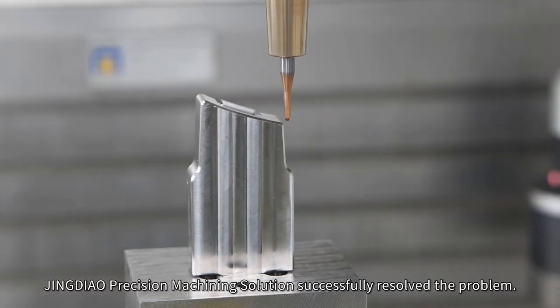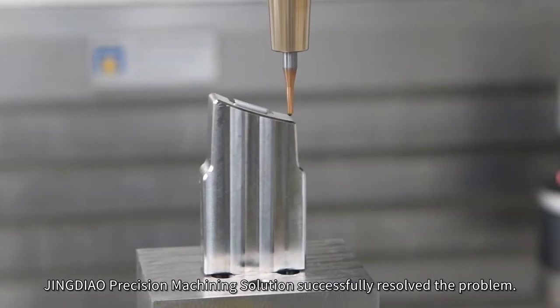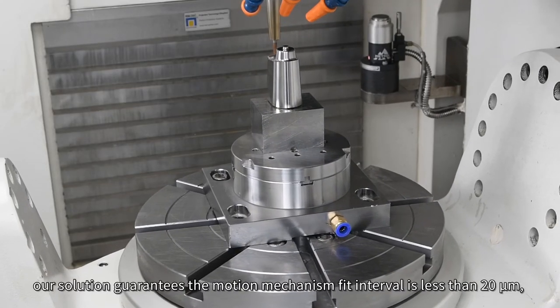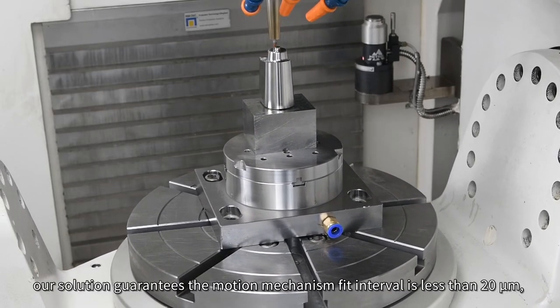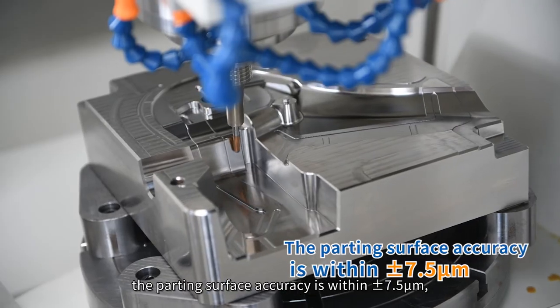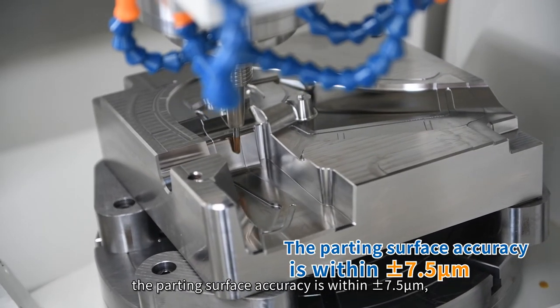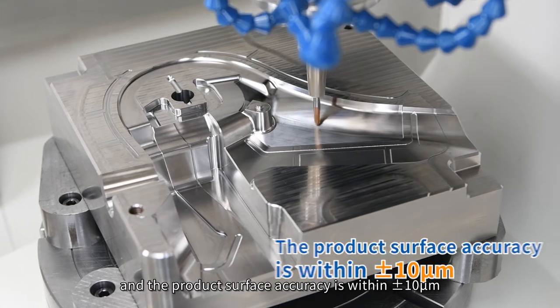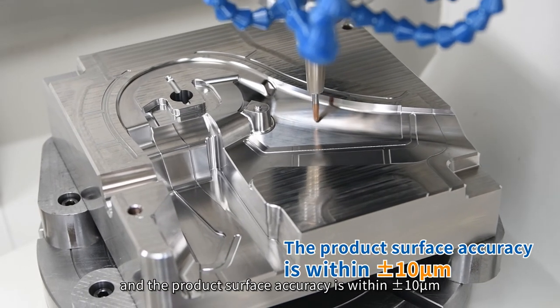Jingdao precision machining solution successfully resolved the problem in the machining process. Our solution guarantees the motion mechanism feed interval is less than 20 micrometers. The parting surface accuracy is within 7.5 micrometers, and the product surface accuracy is within 10 micrometers.